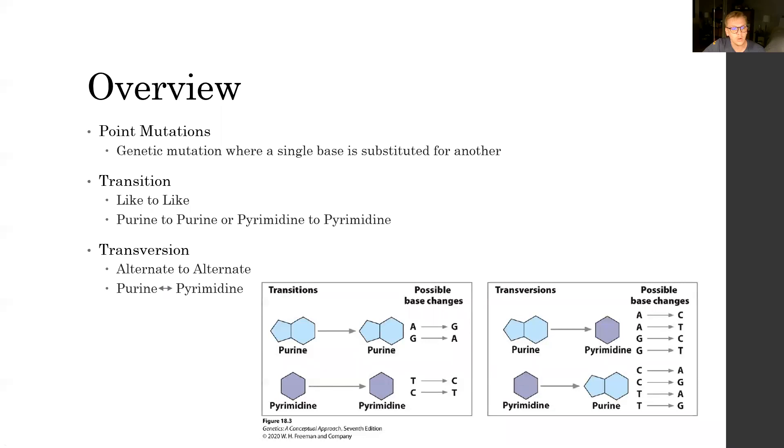or we can have a different type called a transversion. And in a transversion, we have an alternate-to-alternate substitution. And this can be a purine to a pyrimidine and vice versa. You can see this in the graphic below.